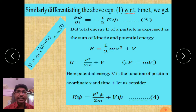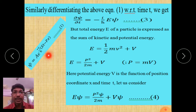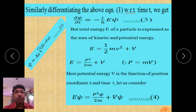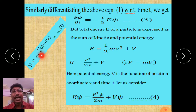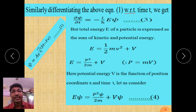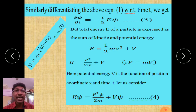Similarly, differentiate equation 1 with respect to time t to get del psi over del t. The t term in the power carries the factor minus i over h-cross times E, so differentiating gives del psi over del t equals minus iE over h-cross times psi. This is equation 3, the derivative of the wave function with respect to time t.